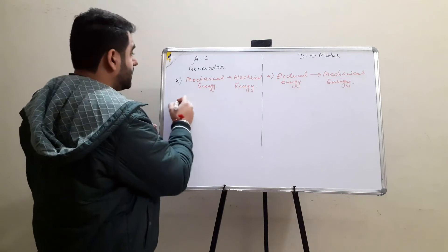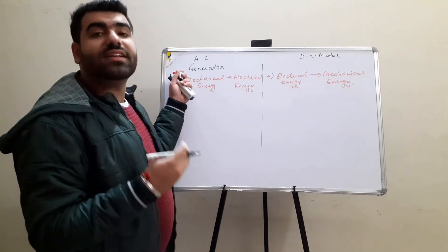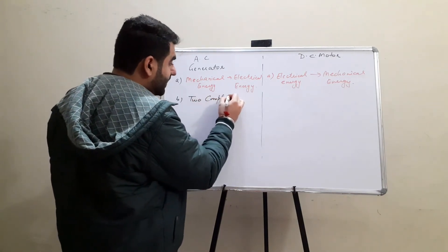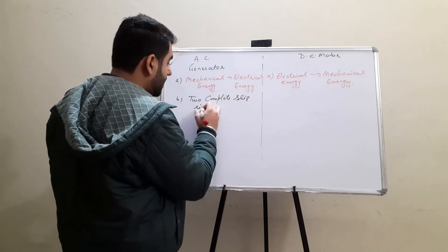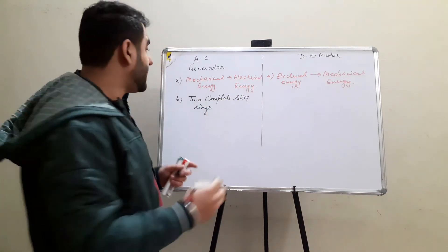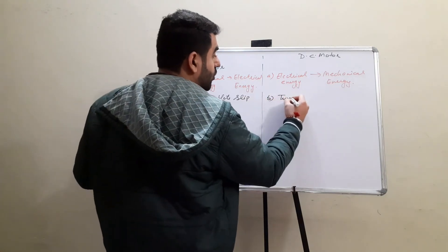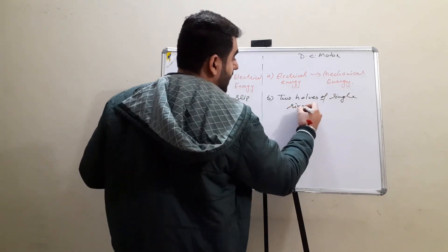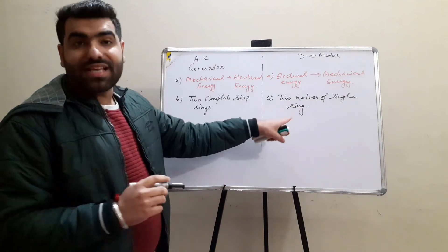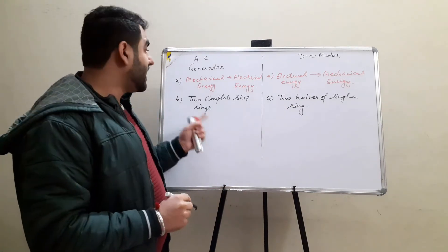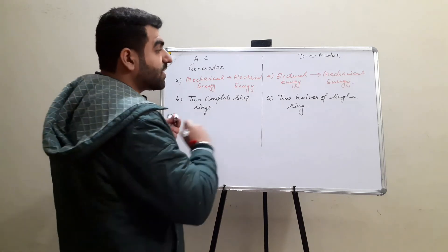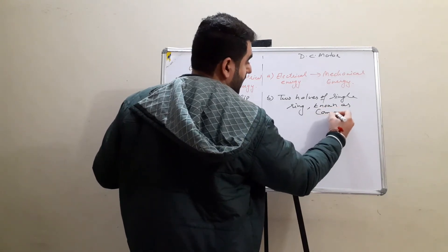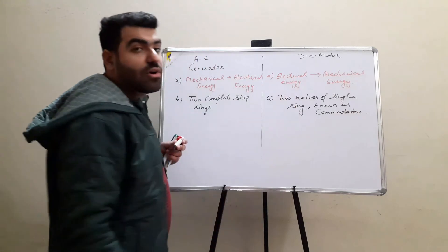The second difference is constructional. In an AC generator, we are using two complete slip rings, whereas in a DC motor, we are using two halves of a single ring — two split parts of a single ring. This split ring is known as a commutator, which we have already discussed.